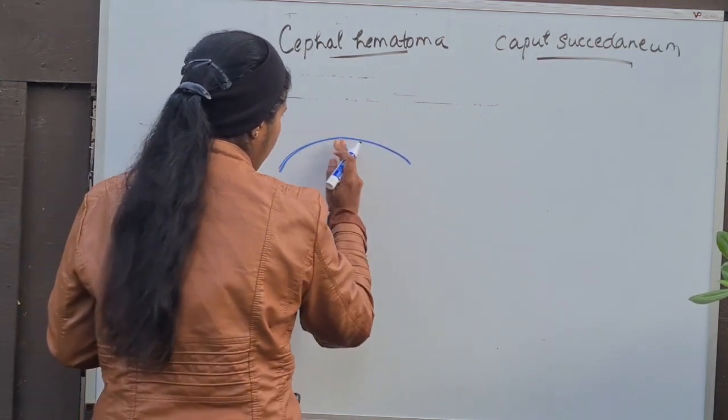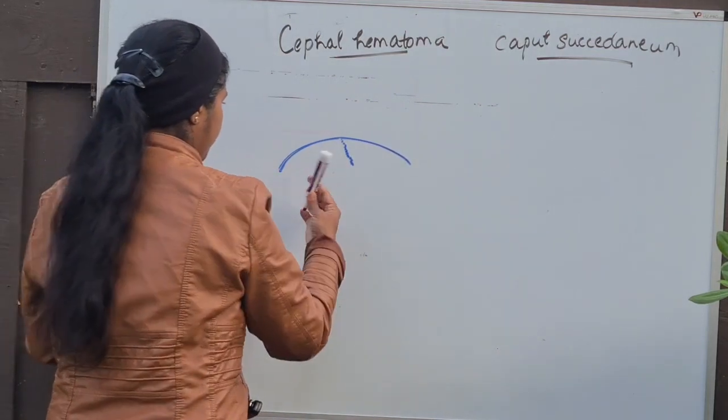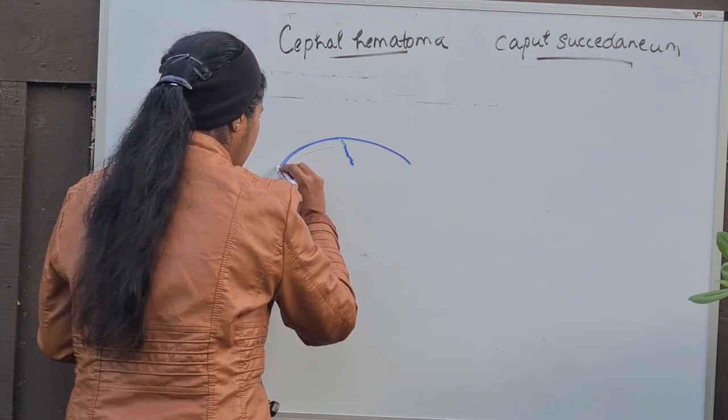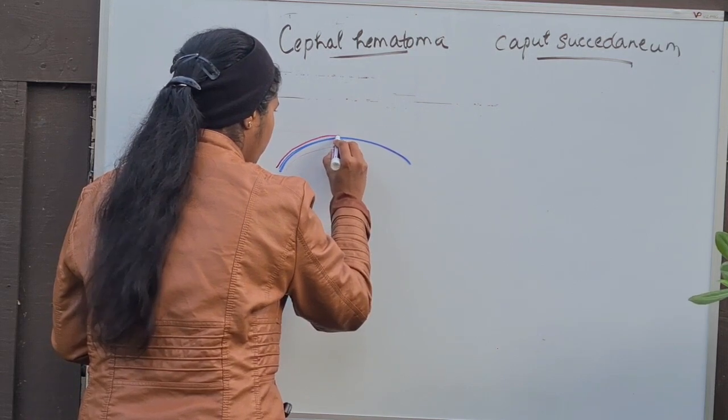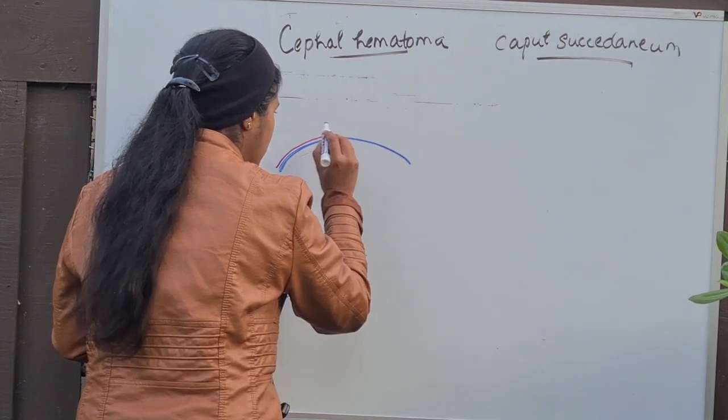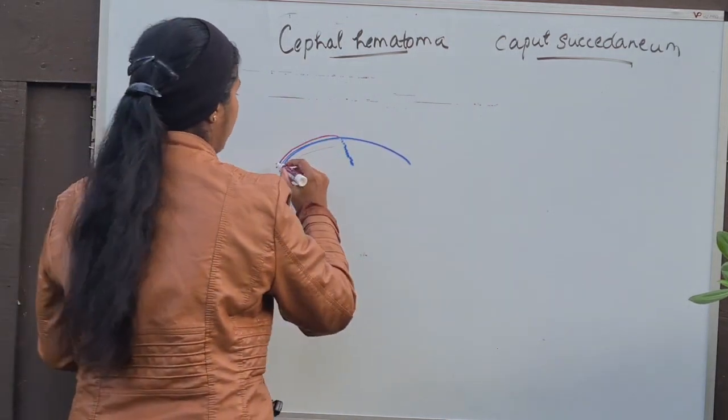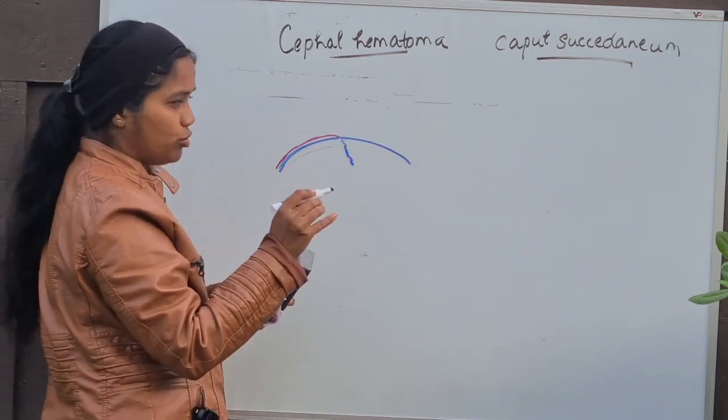And there are suture lines which are present. Overlying the skull, there is a periosteum, a periosteal layer. So the periosteal layer is almost always in continuity with the skull bone. The periosteum is almost always in continuity with the skull bones.